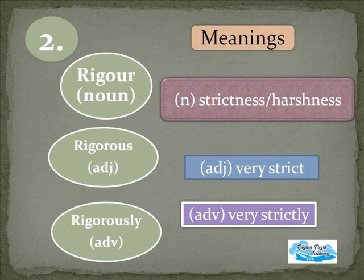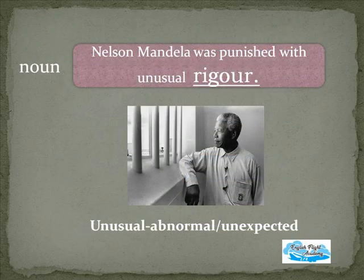The second word of the day is rigor. As a noun, rigor means strictness or harshness. Rigorous as an adjective means very strict, and rigorously as an adverb means very strictly. In a sentence: 'Nelson Mandela was punished with unusual rigor' — unusual meaning unexpected or abnormal. The white ruling government imprisoned him and punished him with unusual harshness.